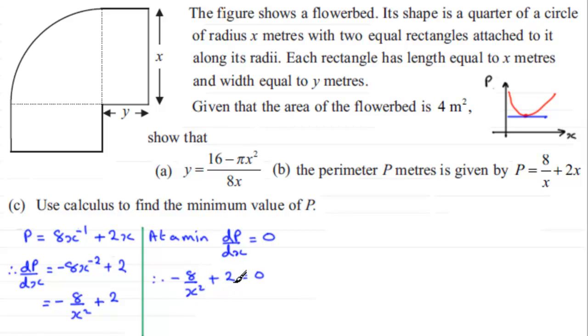So I'm going to multiply throughout by x squared. So if we multiply the first term by x squared, we're just left with minus 8. Next term by x squared is 2x squared, and the 0 by x squared just gives us 0.